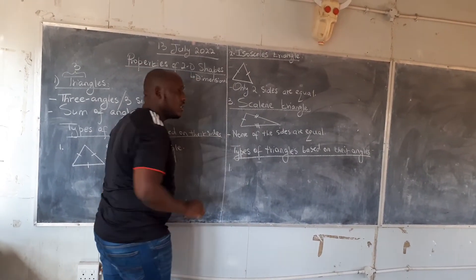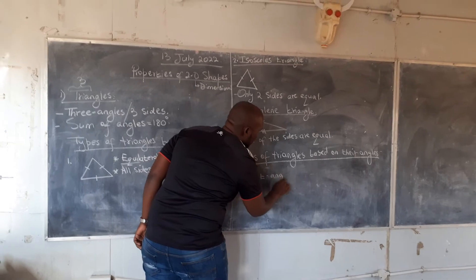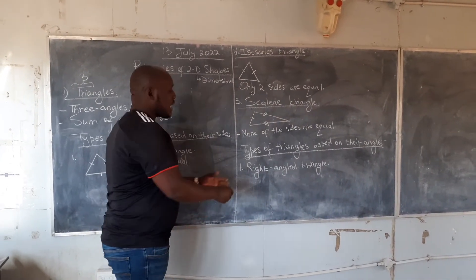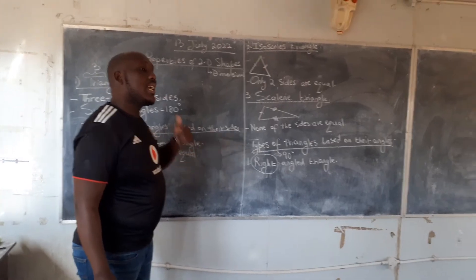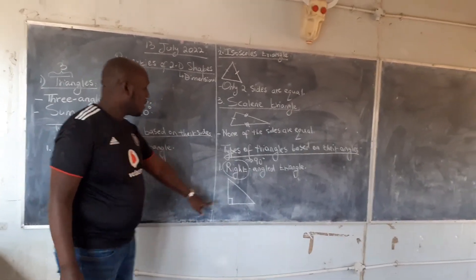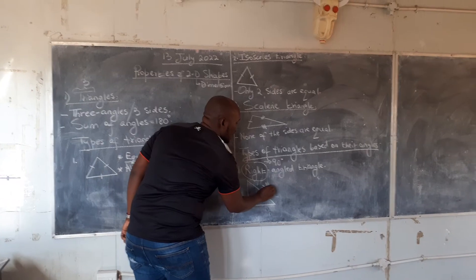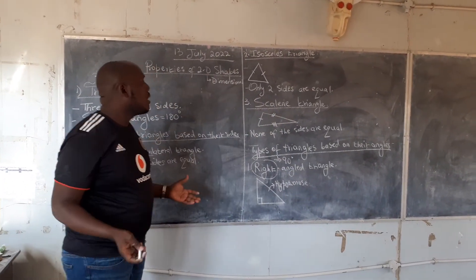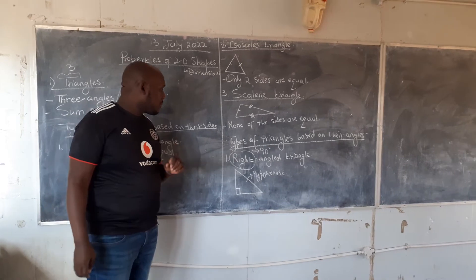The first and most popular is the right angle triangle. A right angle is 90 degrees, so the right angle triangle has got an angle of 90 degrees. We have a special name for the longest side — we call it the hypotenuse. The hypotenuse is the longest side in a right angle triangle.